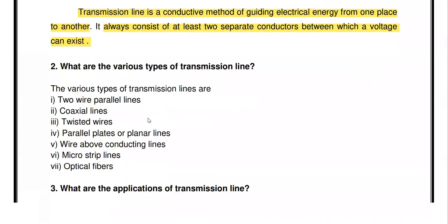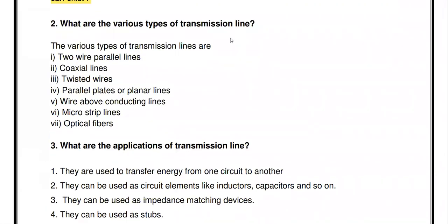What are the various types of transmission line? The various types are: two-wire transmission line, coaxial line, twisted wires, parallel plates or parallel lines, wire above conducting line, microstrip line, and optical fiber. These are all the different varieties of transmission line available to carry information from one place to another.